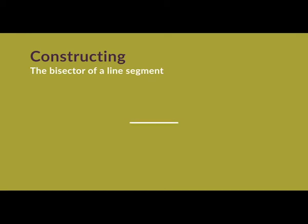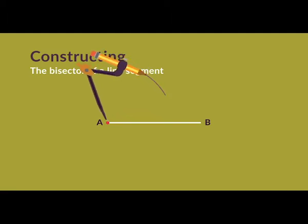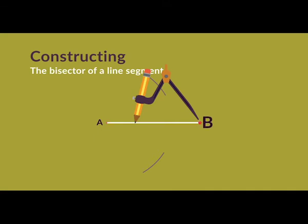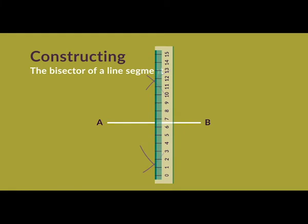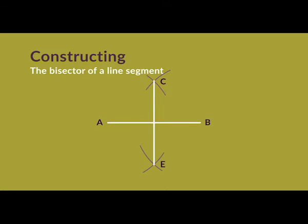The first construction we're going to learn is how to bisect a given line segment. Let's see how to do this with line segment AB. Step 1: place the compass point at point A. Step 2: set the compass to slightly longer than half the length of AB, then draw an arc above and another arc below the line segment, keeping the compass fixed at the same length. Step 3: keeping the compass at the same width, place the point at B and draw arcs above and below the line — these should intersect your first pair of arcs. Step 4: place a ruler along the two intersection points and draw a line. This line segment, labelled CE, bisects AB.